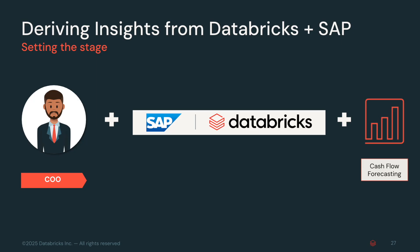Imagine you're the chief operating officer of a global consumer goods company. Your goal is to understand customer payment behavior and cash flow trends quickly so you can make smart operational decisions that keep the business agile and profitable. Your company's financial data lives in SAP S4 HANA, a powerful system, but one where data can be fragmented and hard to access at scale.